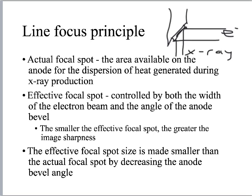The effective focal spot is controlled by both the width of the electron beam and the angle of the anode bevel. If you see 'anode bevel,' don't be scared — it's just referring to the angle of the anode. The smaller the effective focal spot, the greater the image sharpness. The effective focal spot size is made smaller than the actual focal spot size by decreasing the anode bevel angle.